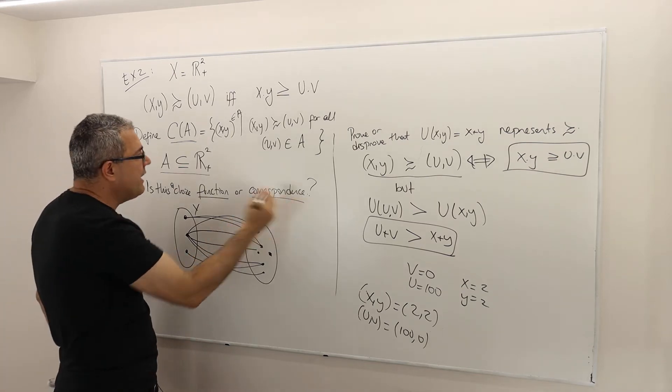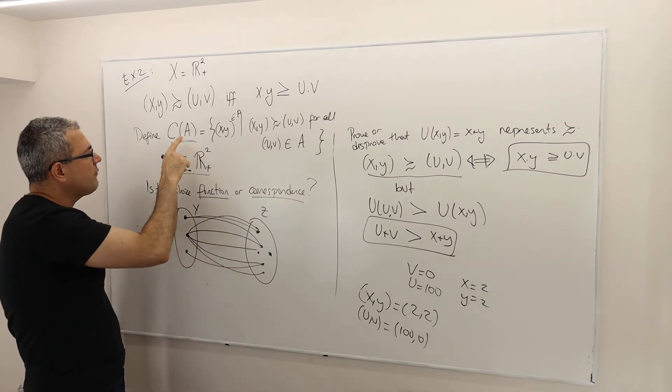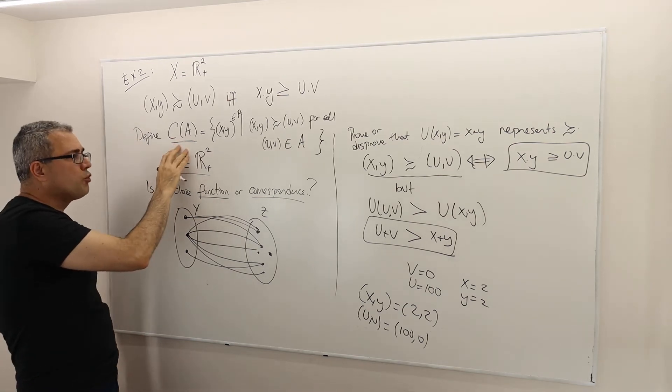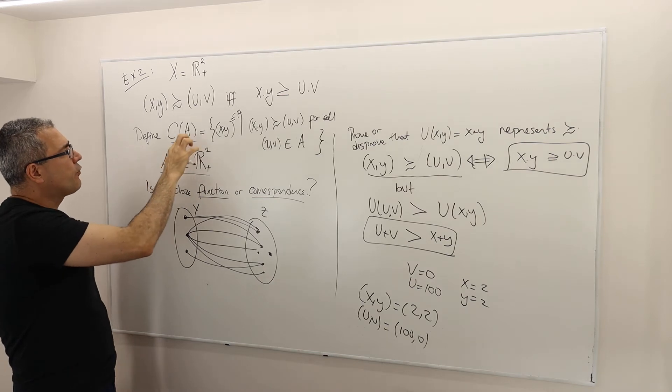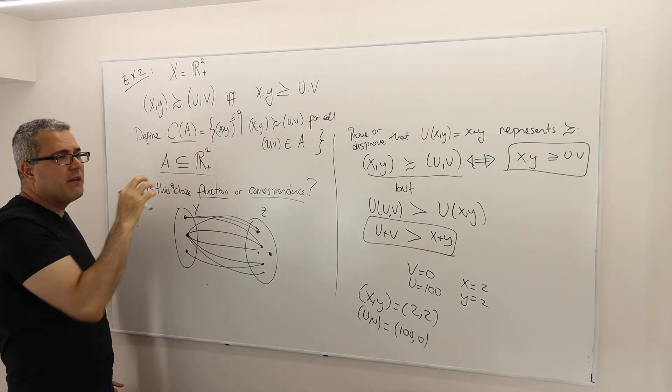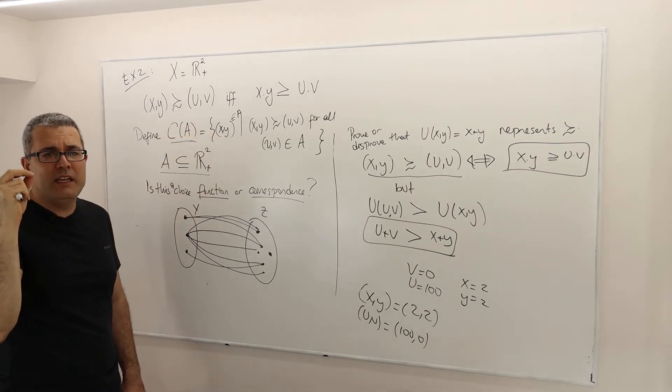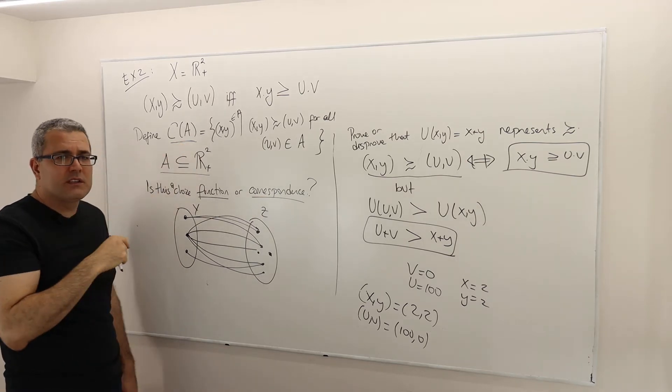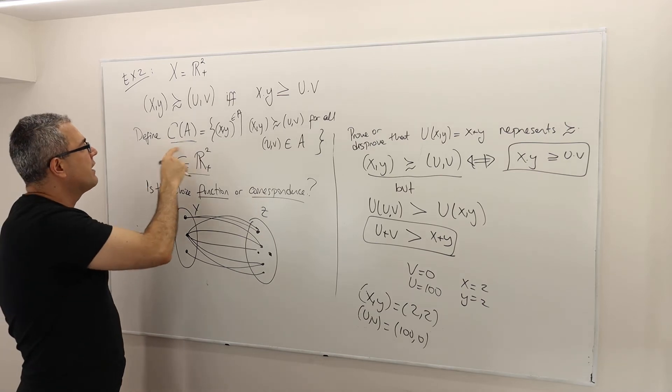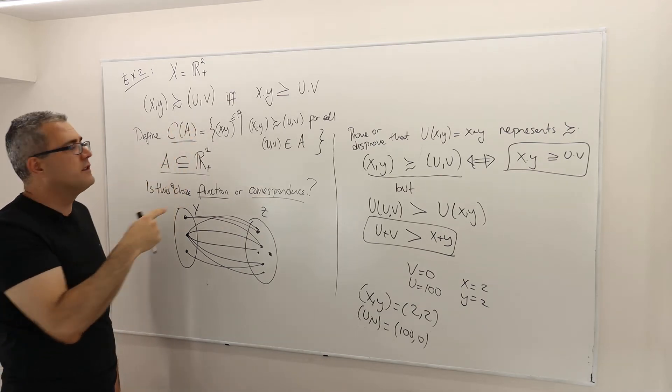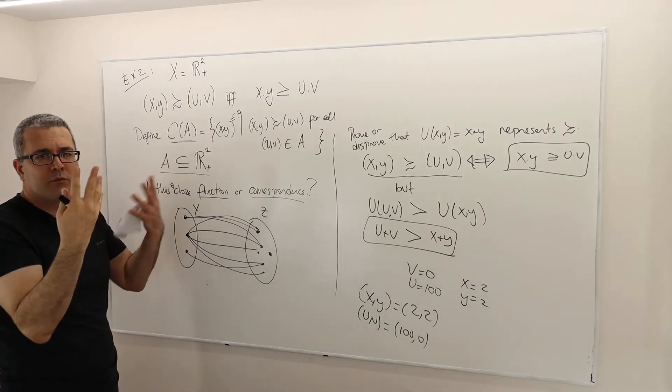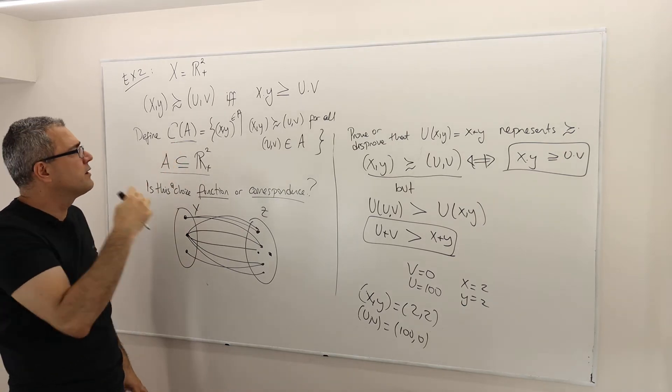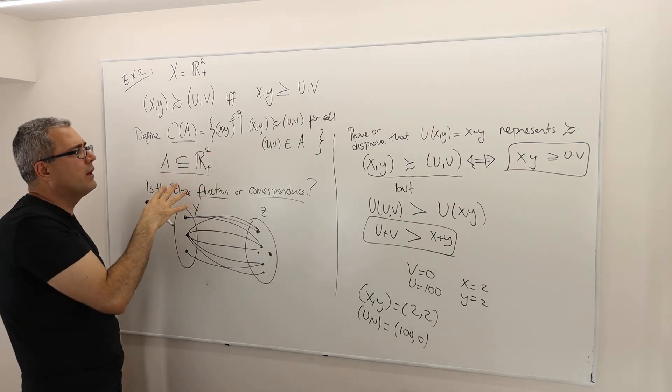Meaning, if this choice rule is a function, then for every A, C of A must be unique, meaning there's only one element in it. But if it is a correspondence, that means for some A's, there are more than one alternatives in C of A. Maybe two, maybe three, I don't know, but for some A's, it doesn't have to be for all, but for some A's, there's going to be more than one.